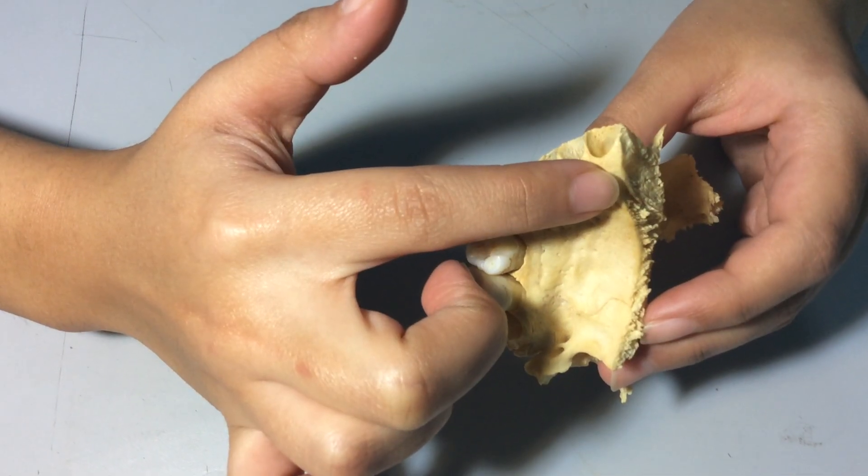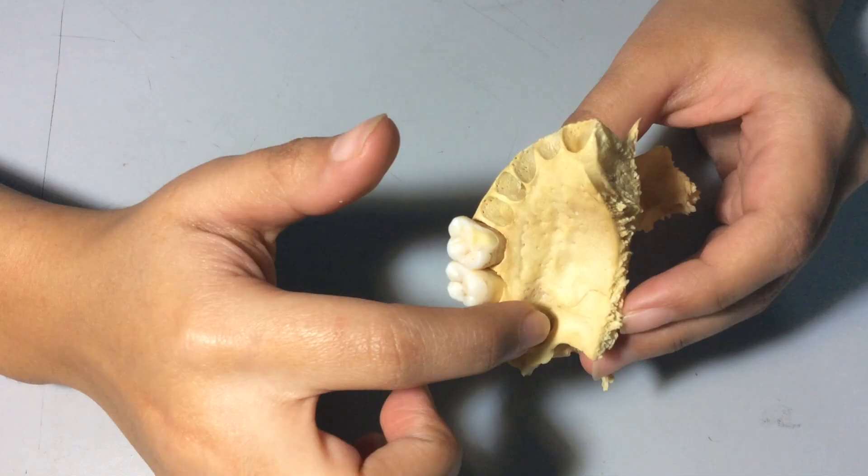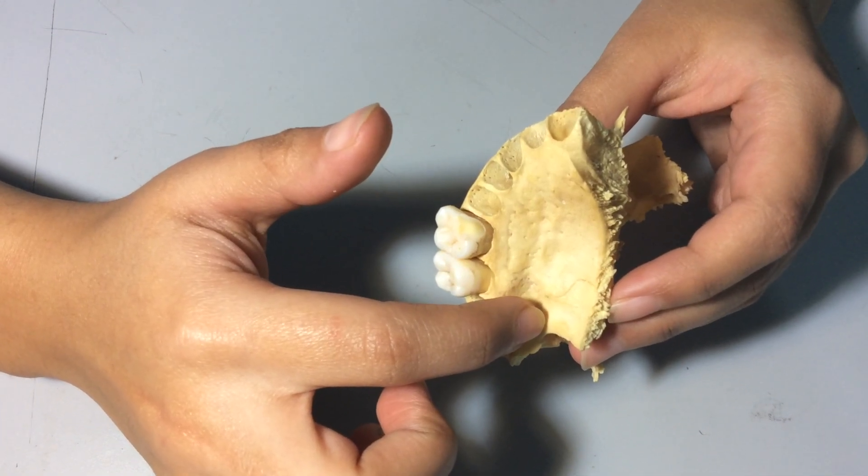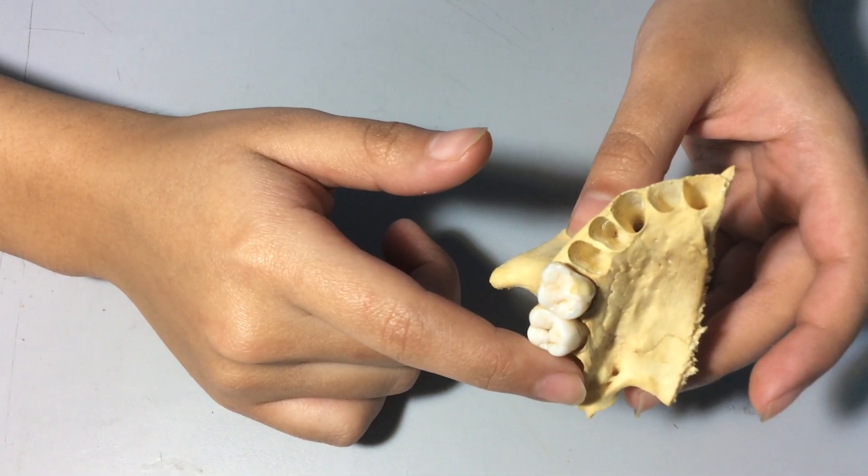Incisive canal transmits nasopalatine nerve and greater palatine vessels, and greater palatine foramen transmits greater palatine vessels. This is the alveolar process which has alveolar sockets.